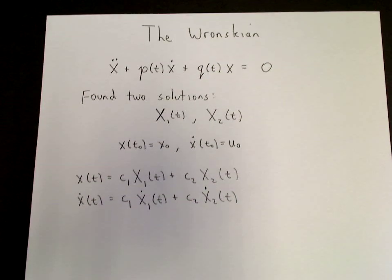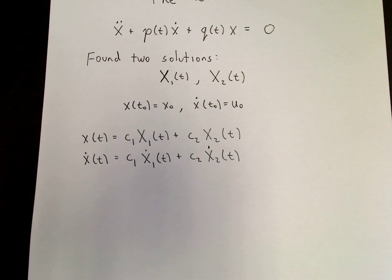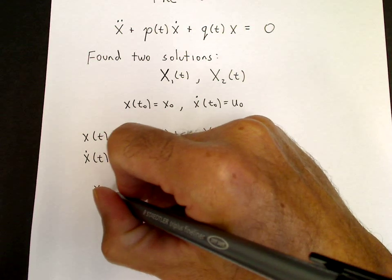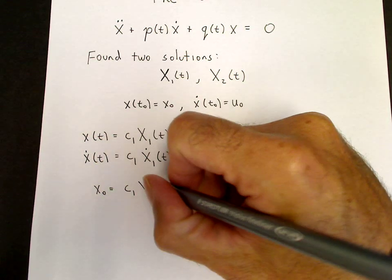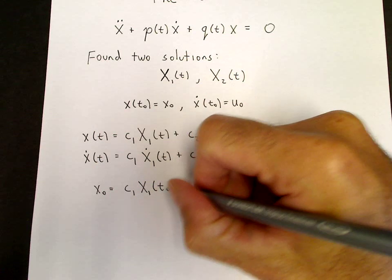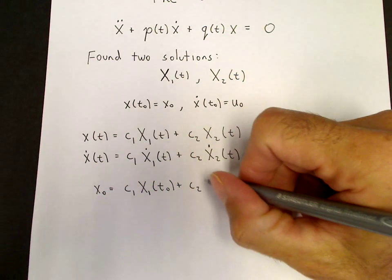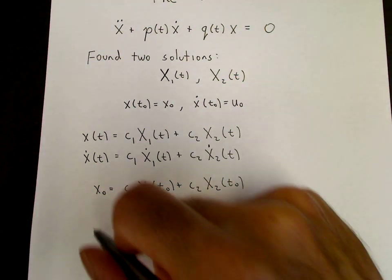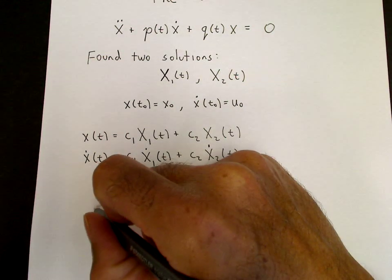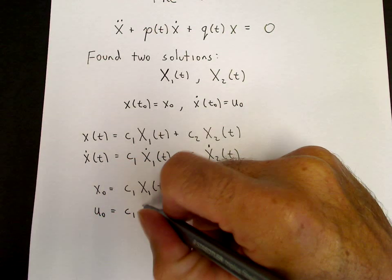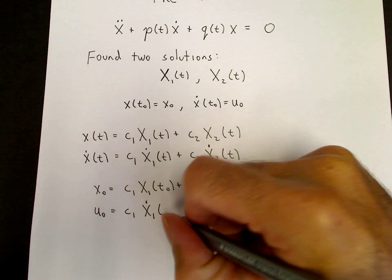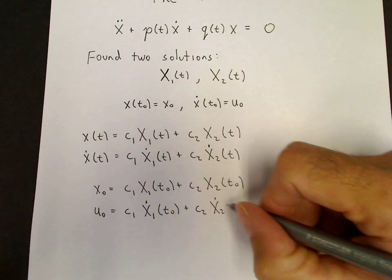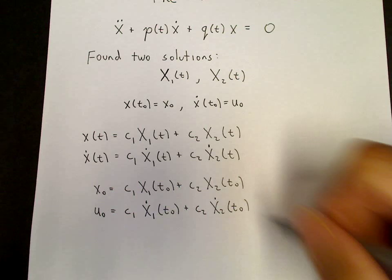And then we apply the initial conditions. So x of t naught is x naught. So that's equal to c1 x1 of t naught plus c2 x2 of t naught. And the initial condition on the velocity will be u naught equals c1 x1 dot of t naught plus c2 x2 dot of t naught.